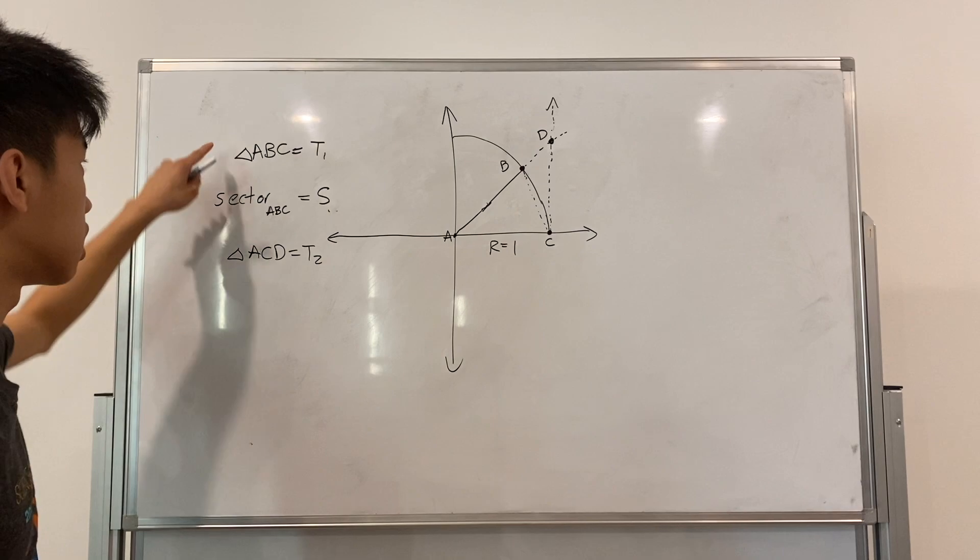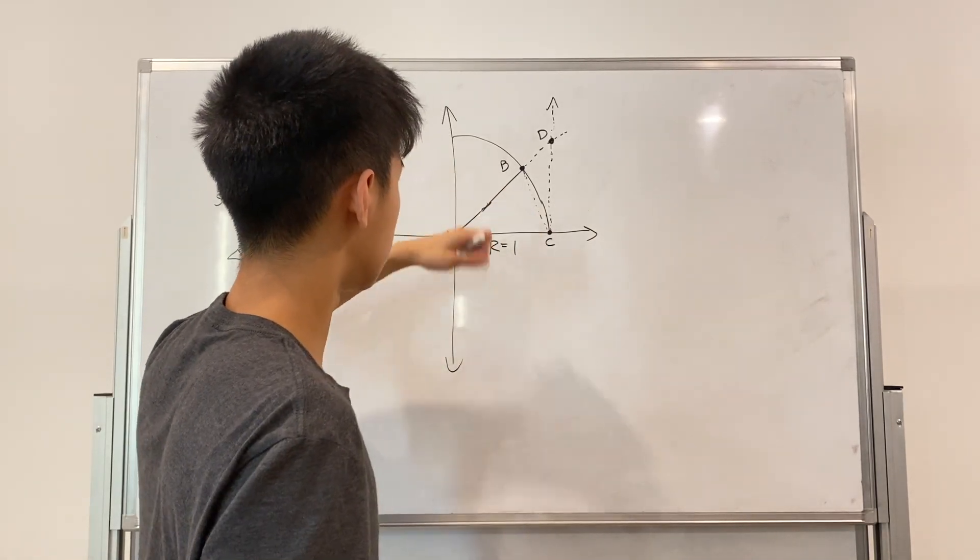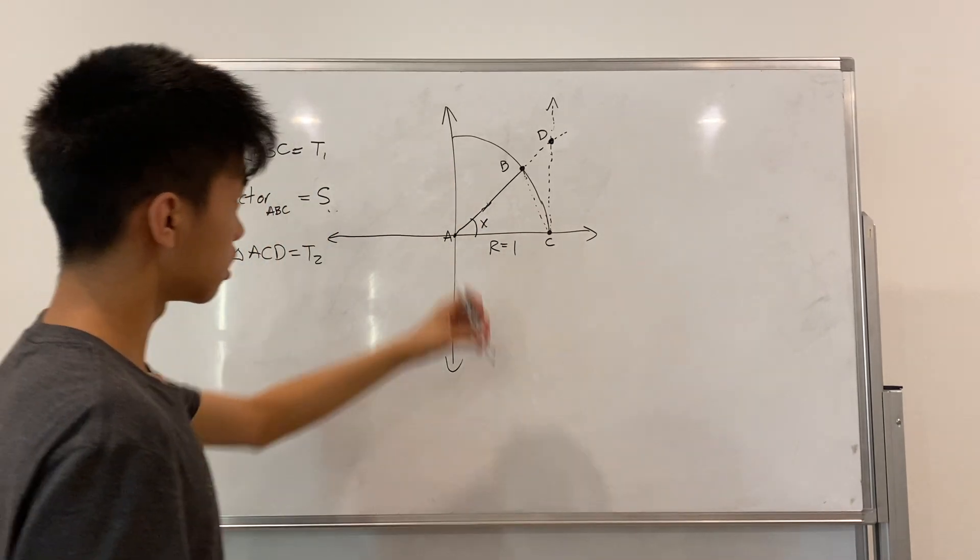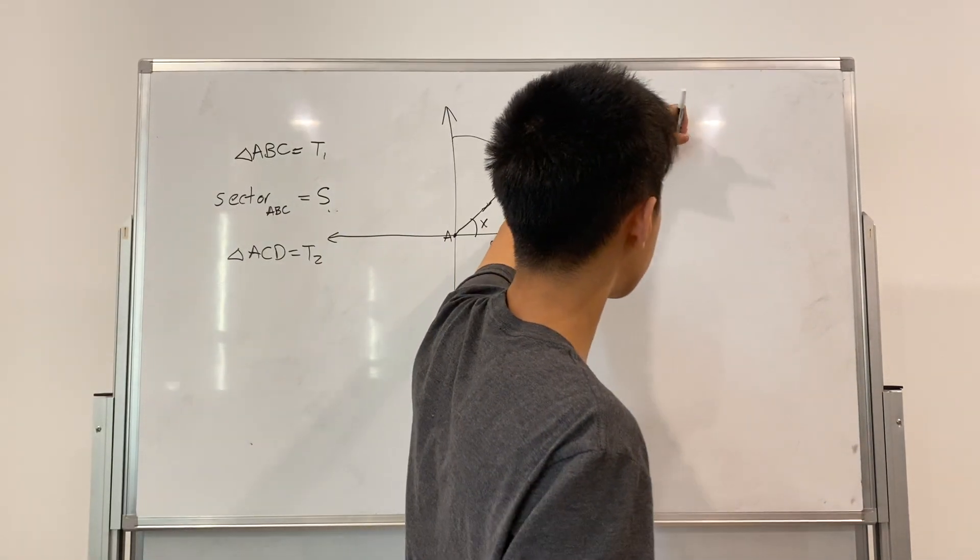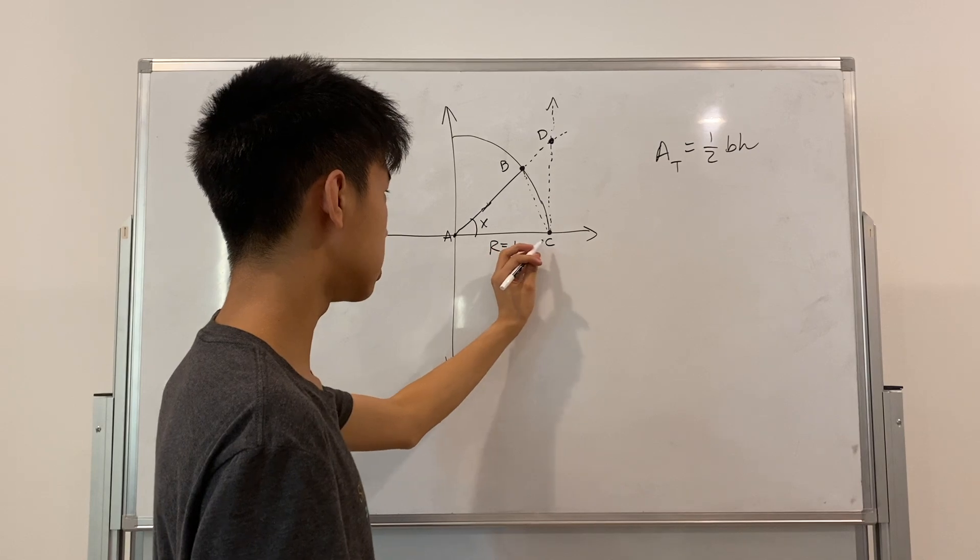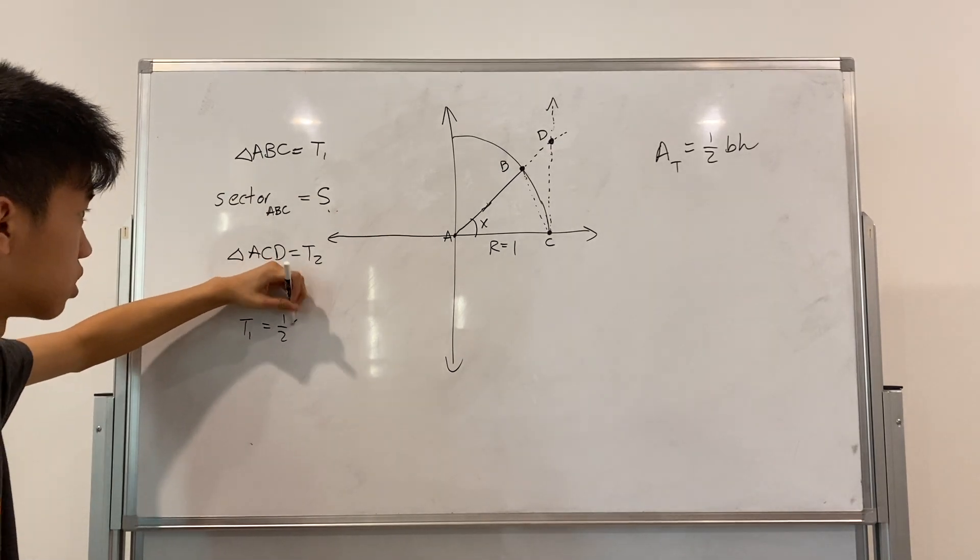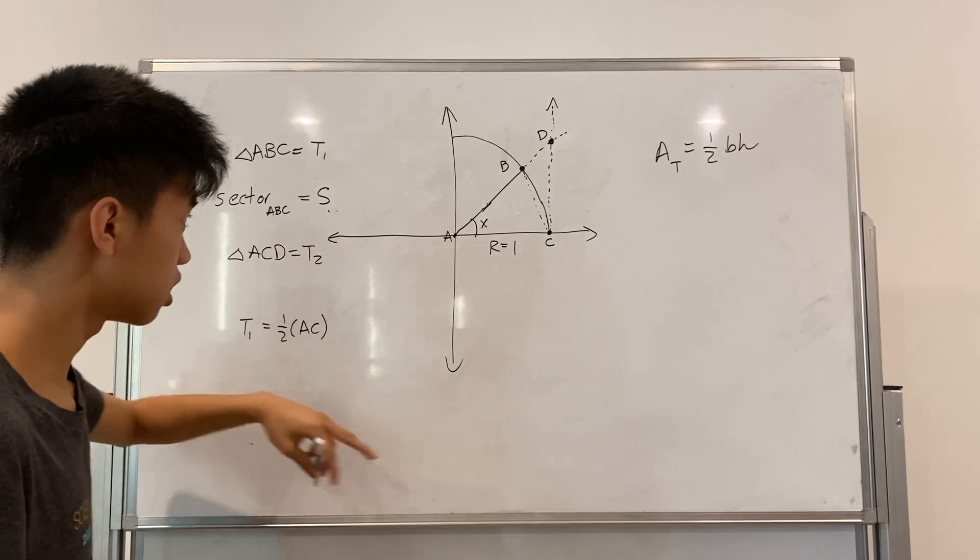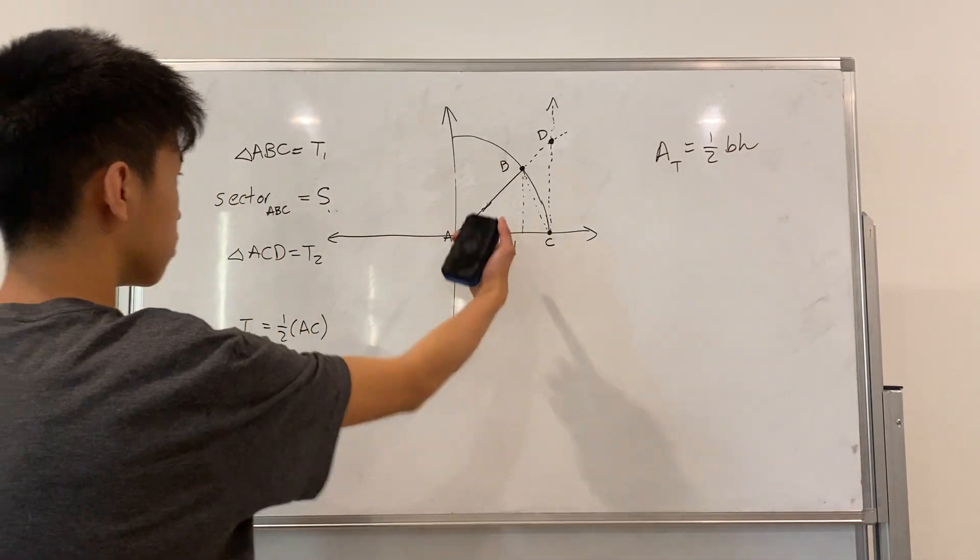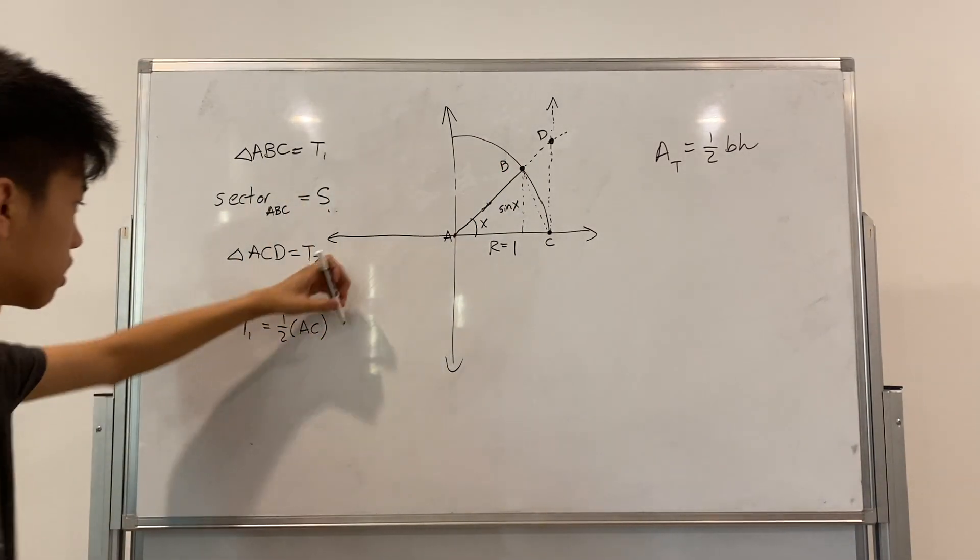Okay, so now we will compare the areas of these three shapes. For triangle ABC, let's say that this has an angle X. So we know that area of a triangle is one half base times height. So, the base is AC for this one, so triangle T1 is equal to one half times AC. And then, we want to find this height, which is the altitude of this triangle. The altitude of this triangle, if you just use a bit of trig, you'll find that it's equal to sine of X.